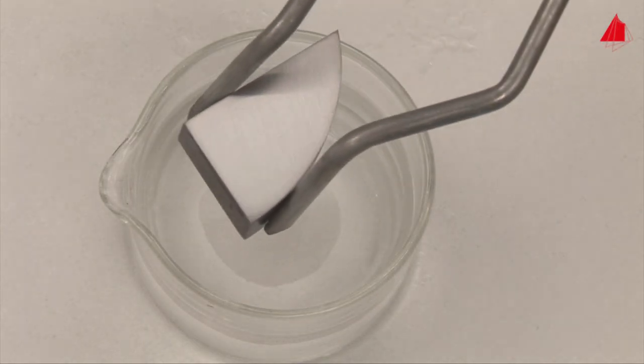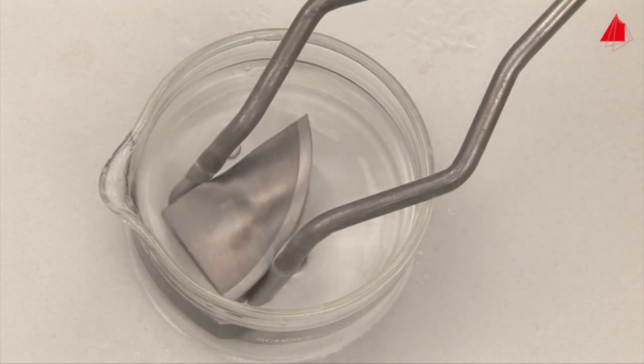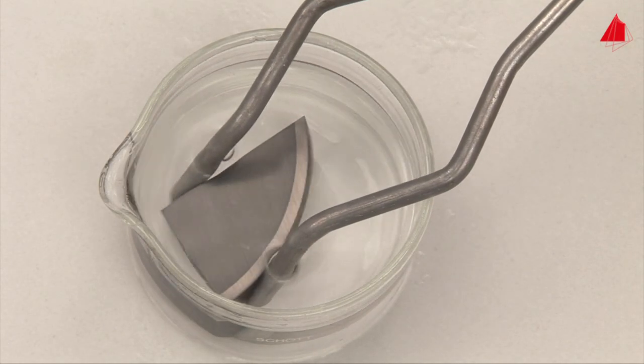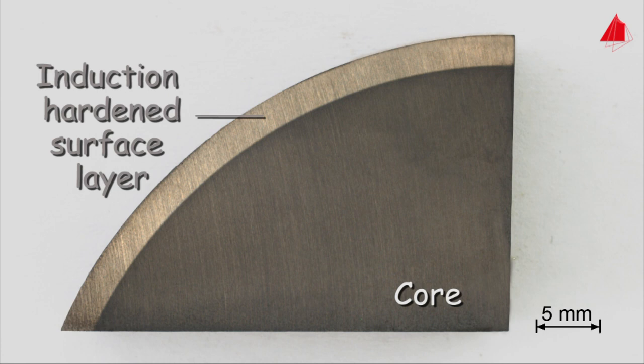Next in line is the section of an induction-hardened cylindrical shaft. The comparatively soft core is much more affected by the etchant than the hardened surface layer. Clearly, the induction-hardened surface layer can be distinguished by its light color from the darker core.